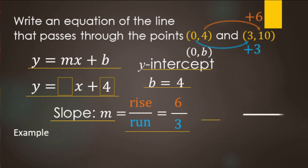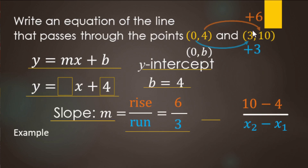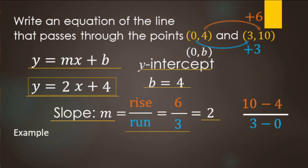If you want to use the slope formula — y2 minus y1 over x2 minus x1 — we call (0, 4) point one and (3, 10) point two. So x2 is three, y2 is ten, x1 is zero, y1 is four. Ten minus four gives six, three minus zero gives three. We end up with six-thirds, which simplifies to two. So the equation through these two points is y equals two x plus four.